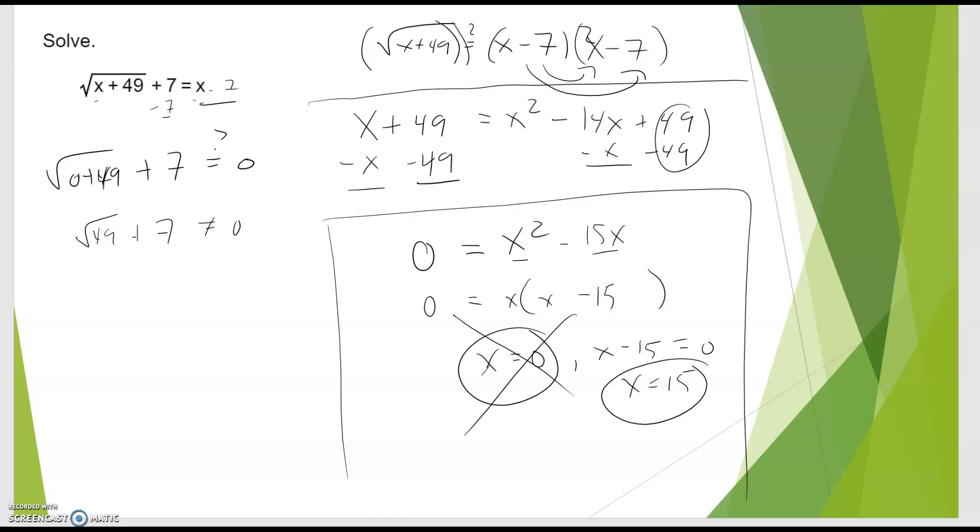How about the other one? Does 15 work? Square root of 15 plus 49 plus 7. Notice I plug it into the original equation. I put a little question mark there. Does that work? Well, this is 64. Square root of 64 is 8. 8 plus 7 is, in fact, 15. So when I answer that, I only have one solution, x equals 15.